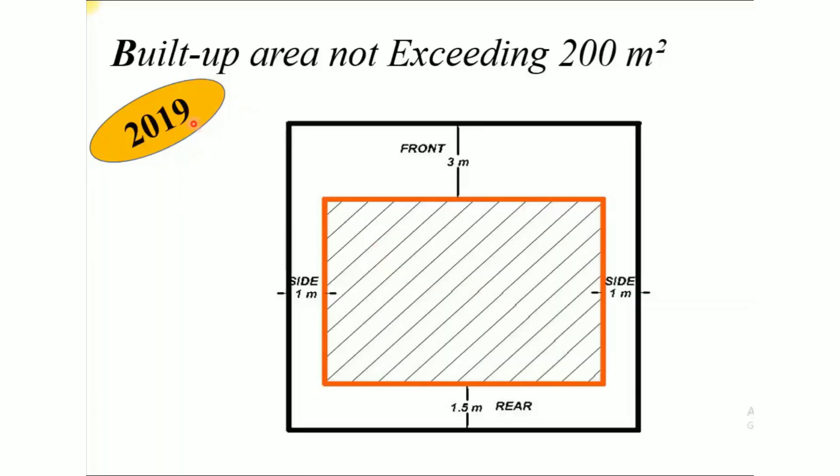We set by side-wise, front-wise, back-side, and average close distances. That is our side-wise, front-wise, irregular shape, and sufficient distance. We have an average, close, and close measurement to consider.